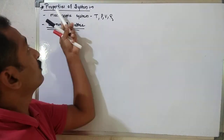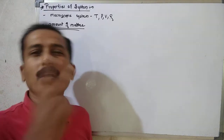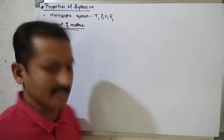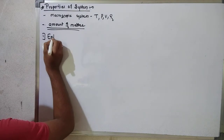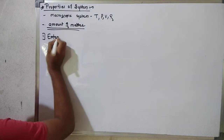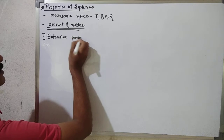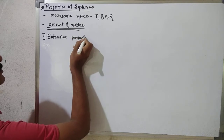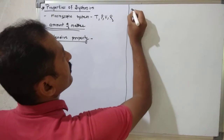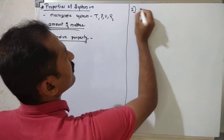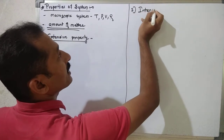The properties of the system are classified into two types. The first one is extensive property, and the second one is intensive property.